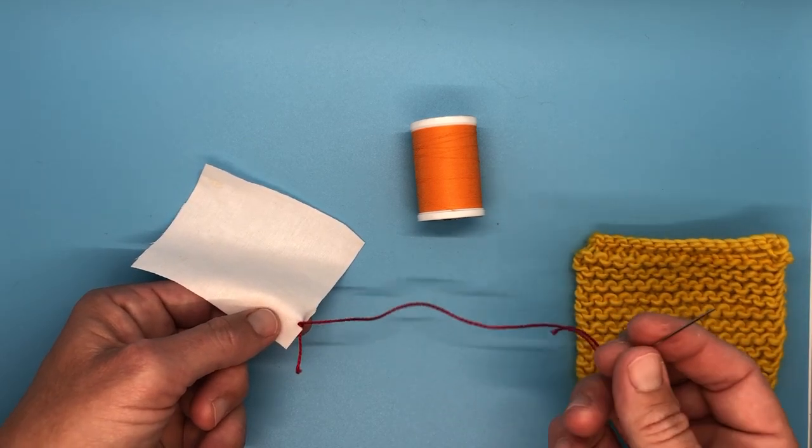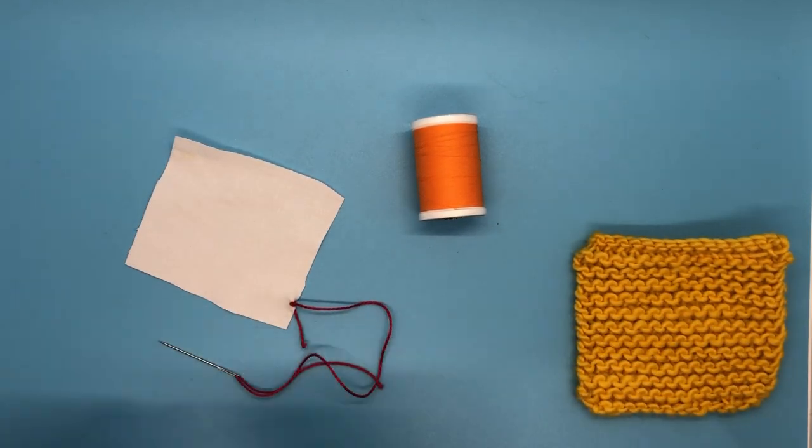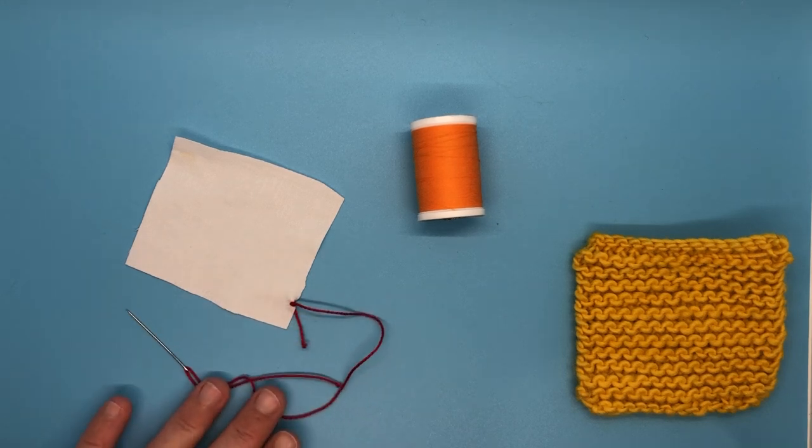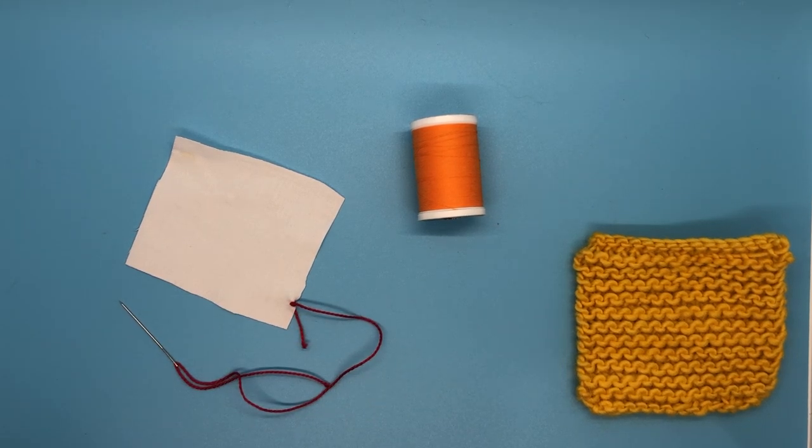I call it knotting on when we start a new piece of thread. We can use the same knot at the end of the thread to knot off and secure our stitches.